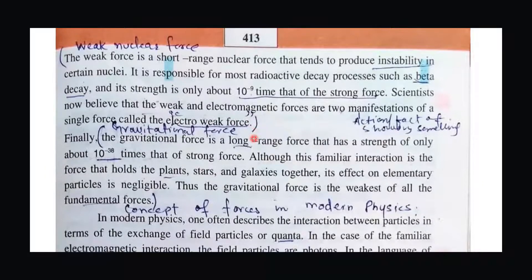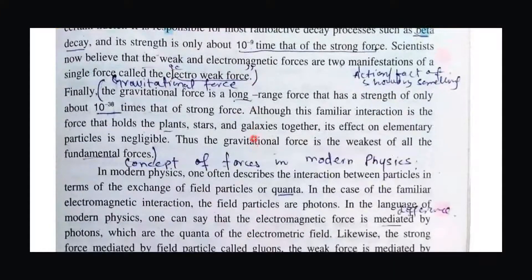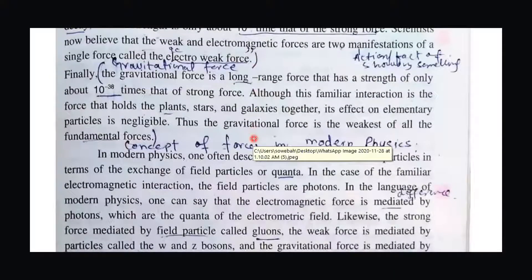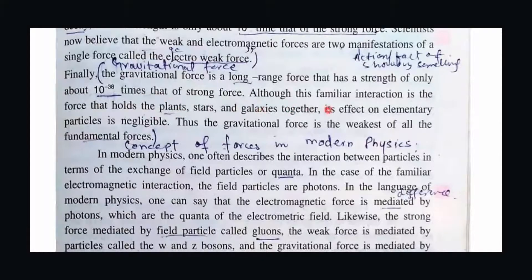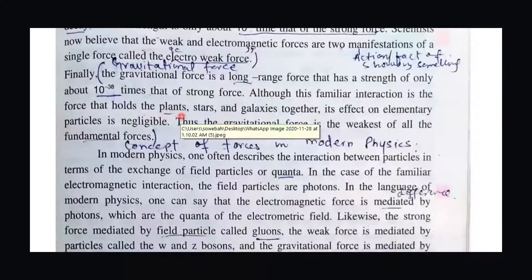The fourth force is gravitational force. We are very familiar with gravitational force. This force is a very small part of the strong force — only 10 to the power of minus 38 times the strength of the strong force. But it is long range because it extends to planets, stars, and galaxies. Everything in nature is under gravitational force. Even though it is very weak, it provides stability and is very helpful for us. Gravitational force is the weakest of all the fundamental forces.